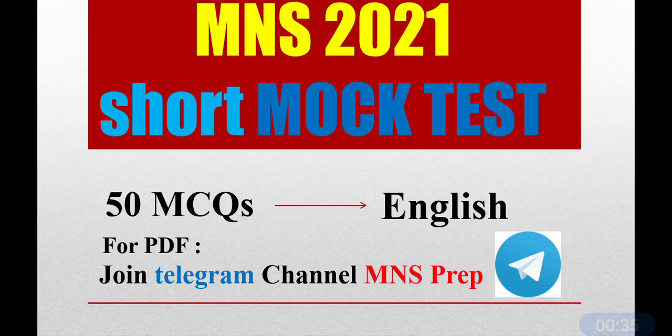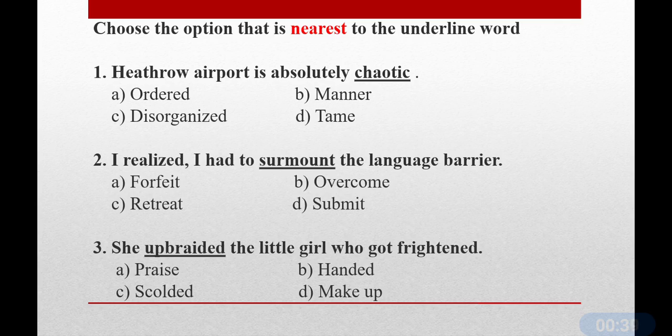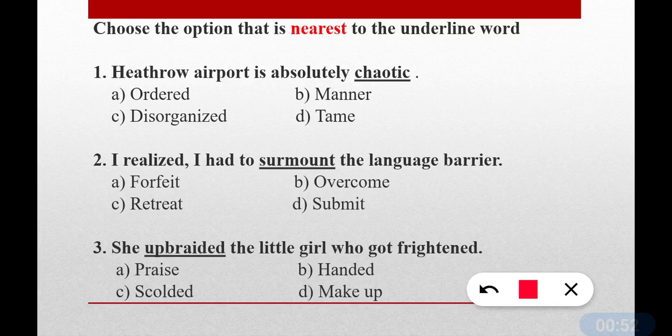Let's get started. Question number one: you have to choose the option nearest to the underlined word — that is, synonyms. You have to find the correct meaning of the underlined word. Question number one: Heathrow Airport is absolutely chaotic. What is the meaning of 'chaotic'? The correct answer is disorganized — option C is correct. We can also say disordered.